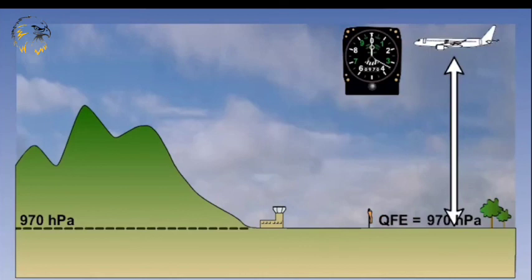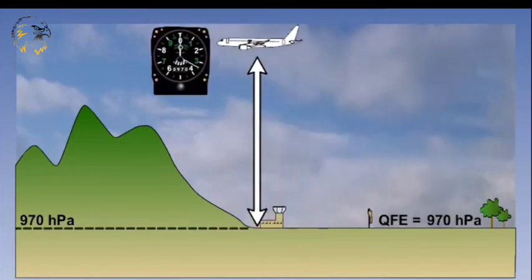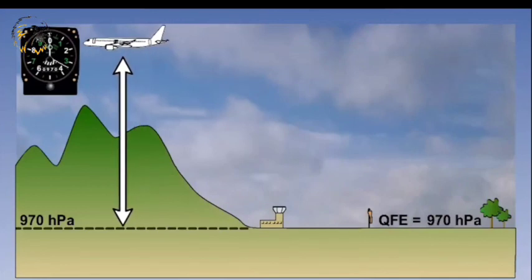This can only be useful within the immediate confines of the airfield. Looking at the diagram, we can see that if we were to fly five miles away, the altimeter will still read the height above the airfield.